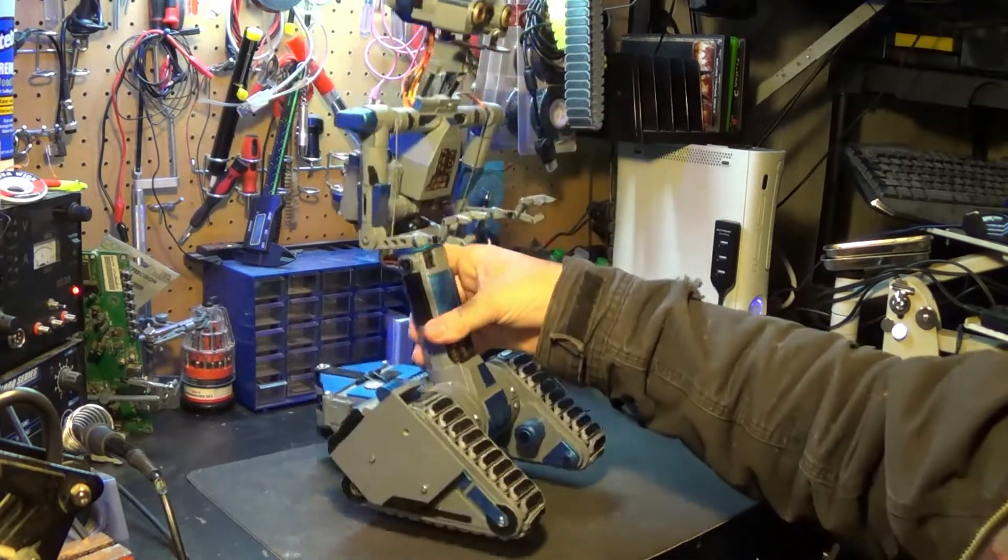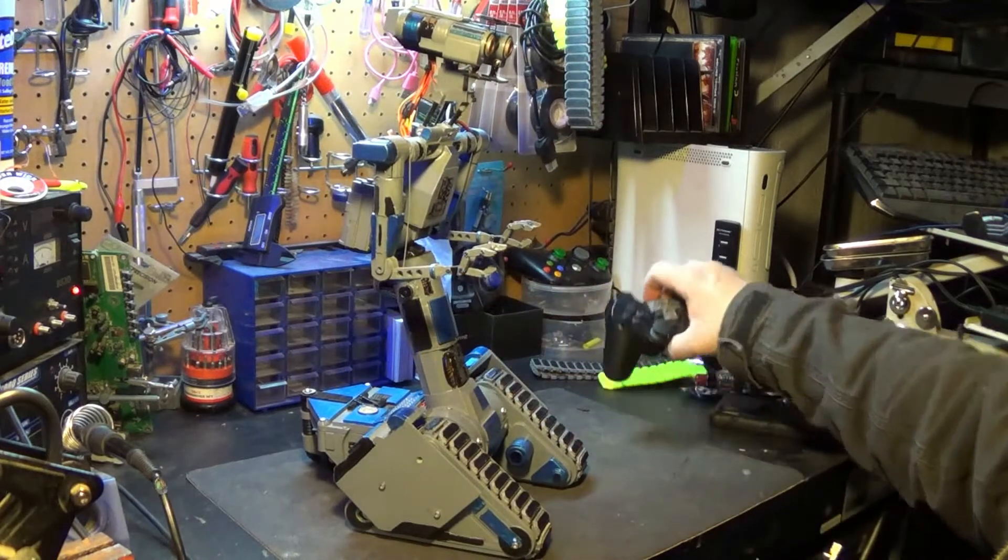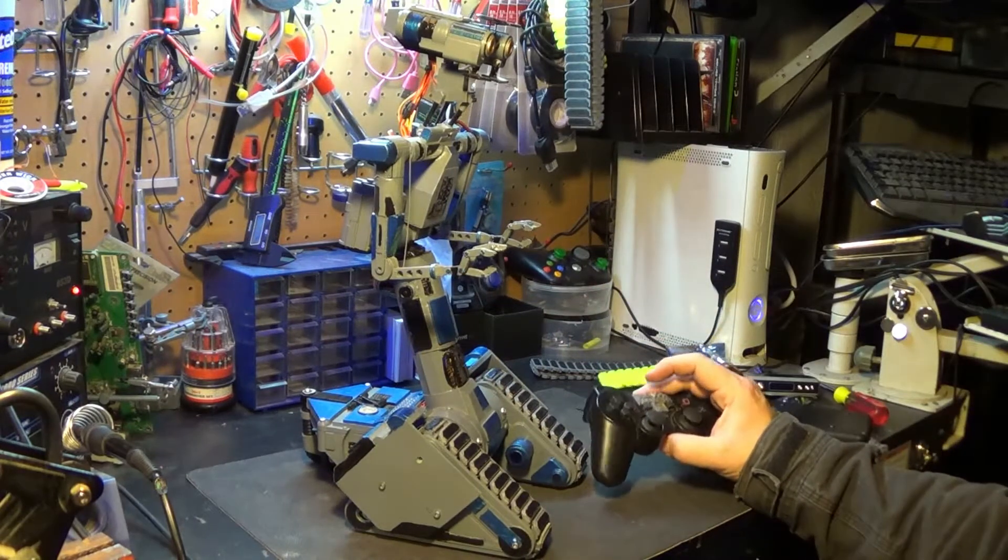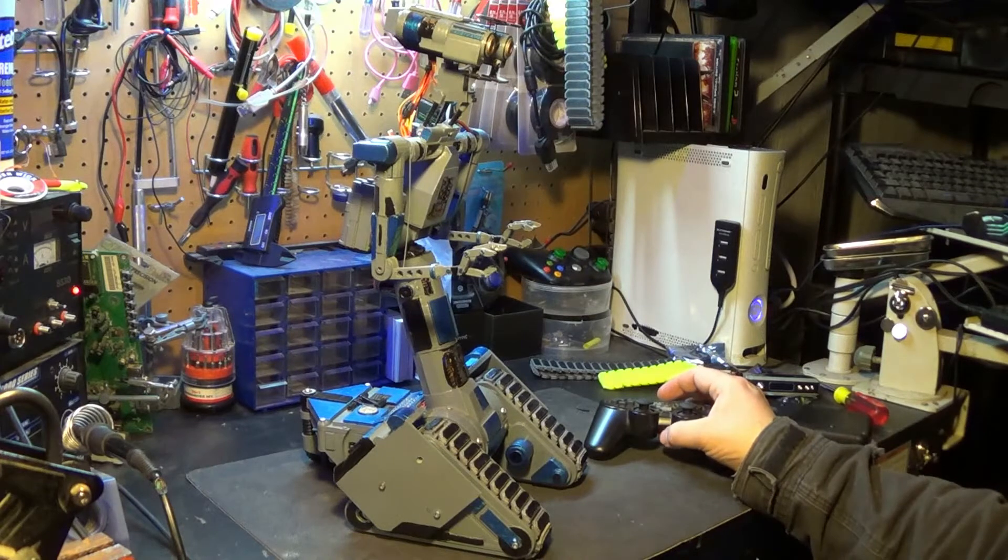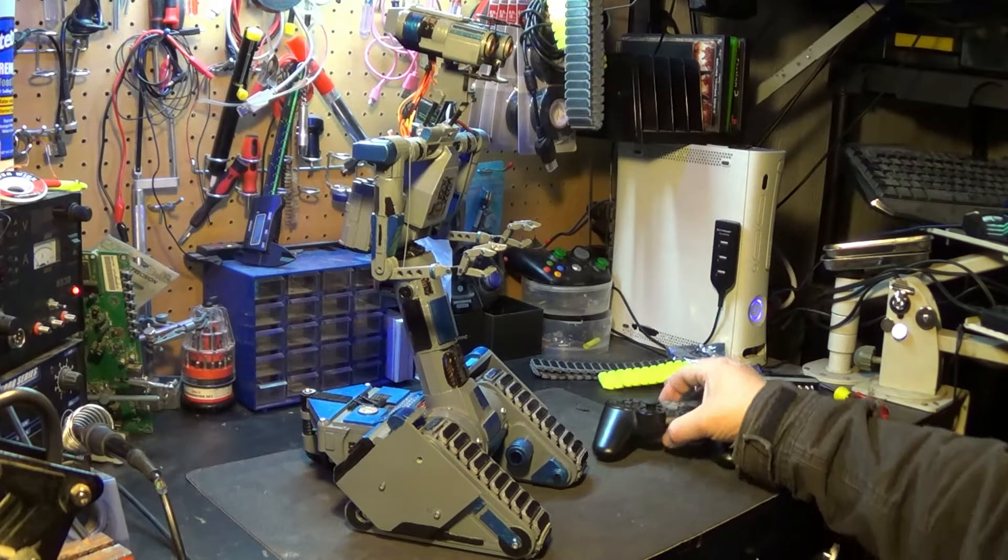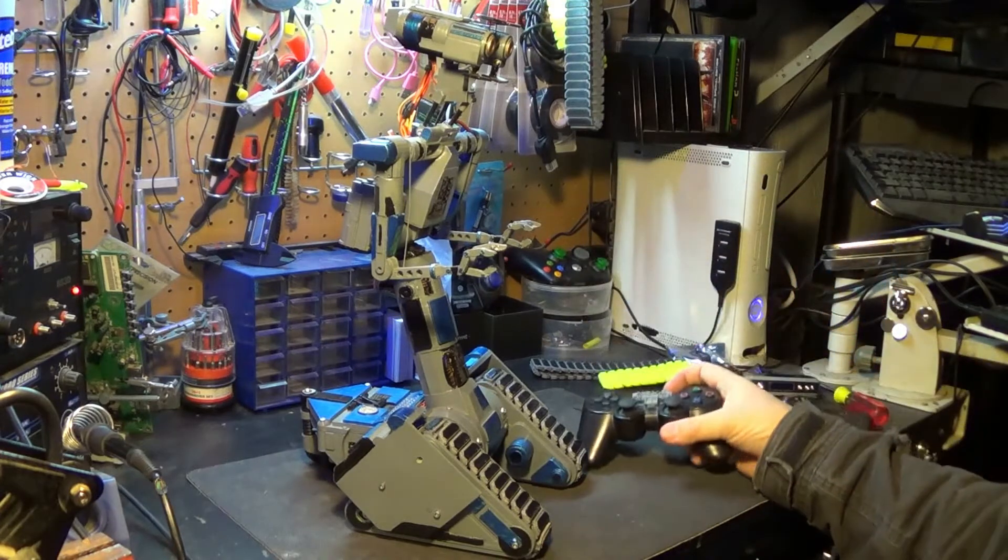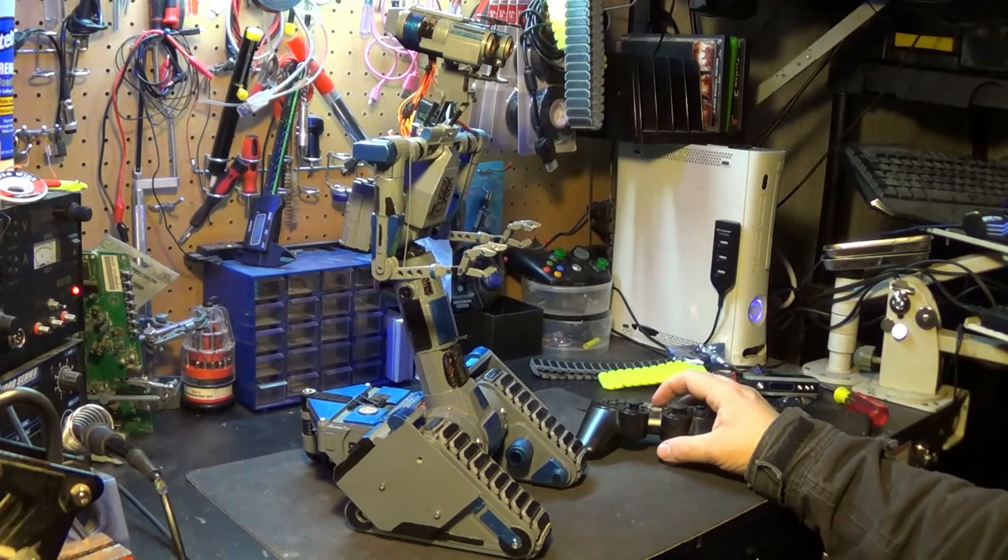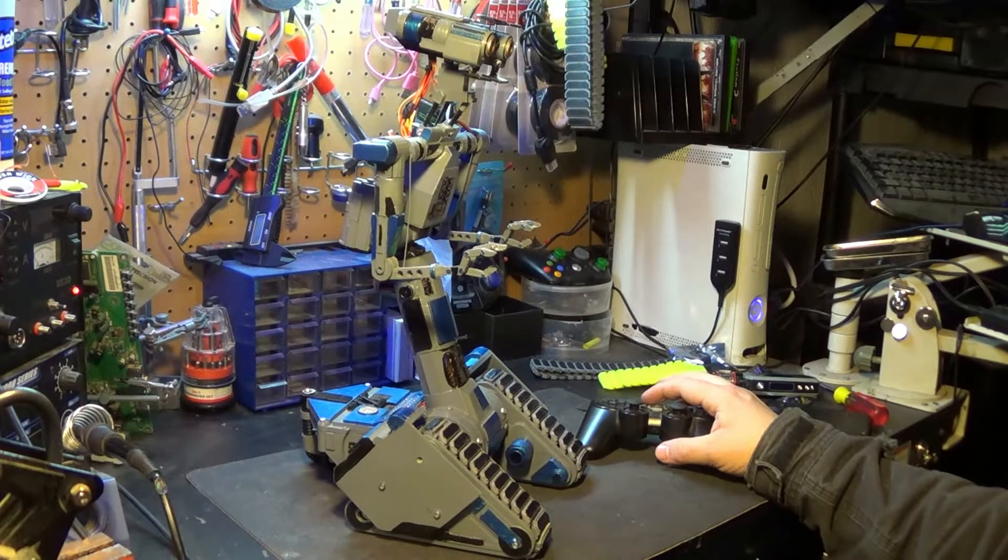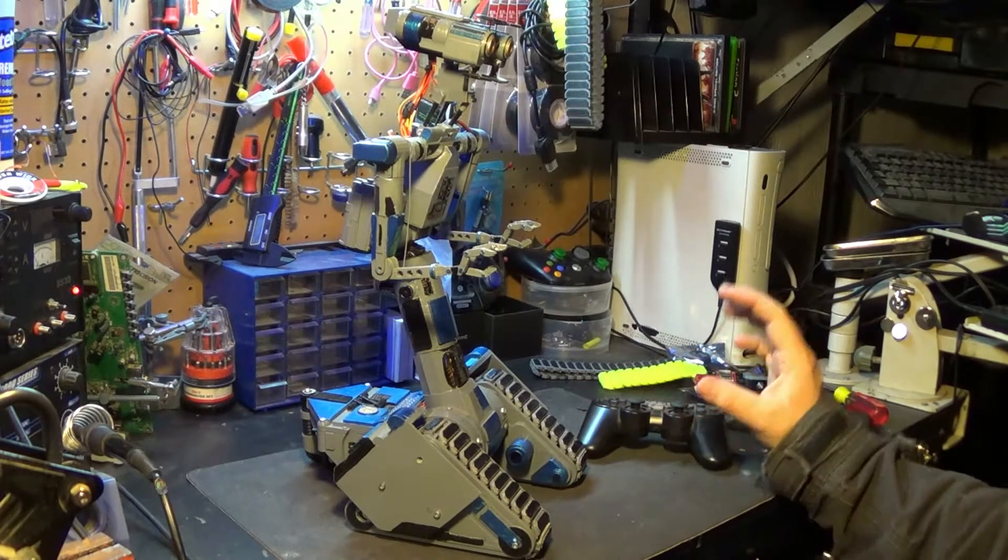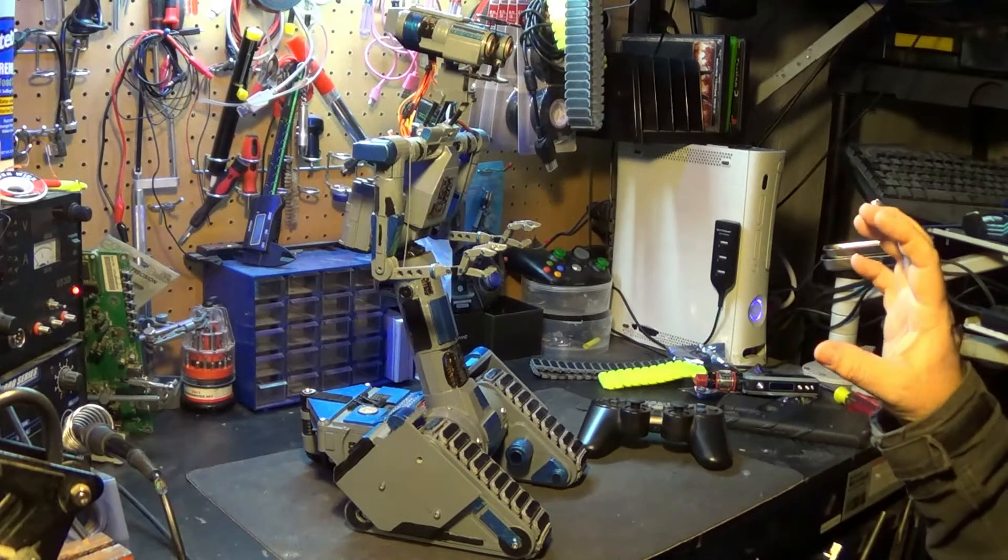The only thing I kind of skimped out on, because I wasn't even sure if I could accomplish this, was the mouth LED module and talkability. So right now he's a very quiet robot, but that's okay, because again, this was more or less just to see if it was even possible. Ran by a PS2 remote with the Arduino Mega Mini.